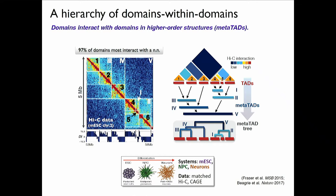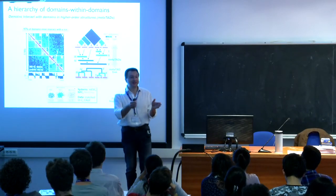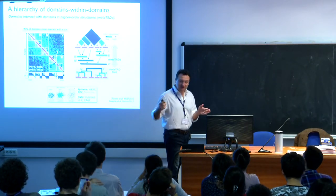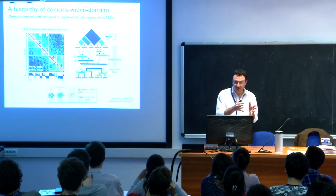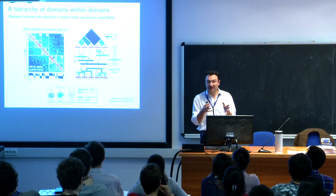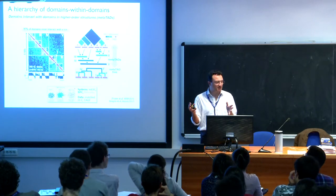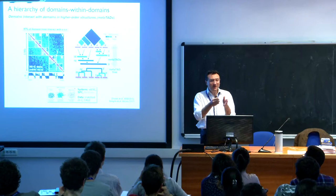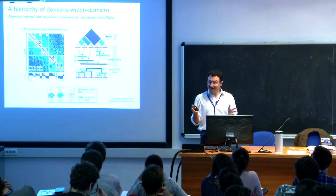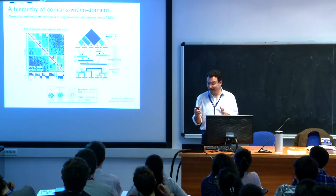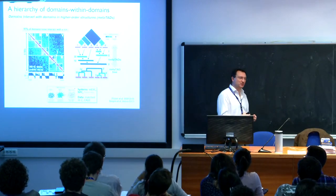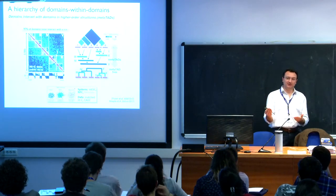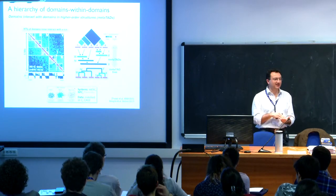We ran our own experiments — Hi-C data in mouse cells. We did an experiment in the model system where you move from embryonic stem cells to neural precursors and then post-mitotic neurons. We wanted two types of information: how chromosomes fold, and how that changes during differentiation. Is the chromosomal architecture of a neuron distinct from that of an embryonic stem cell? We have a time course of three points, our own Hi-C data, and CAGE transcription data. CAGE is a technology to provide information on which gene is being transcribed. We want to link architectural changes to transcriptional changes.